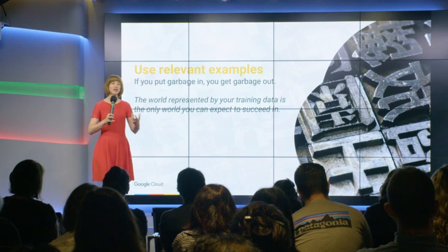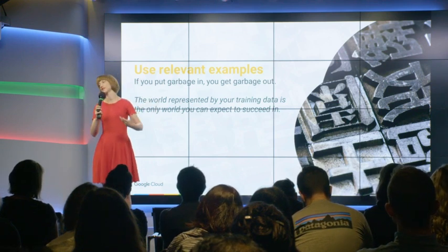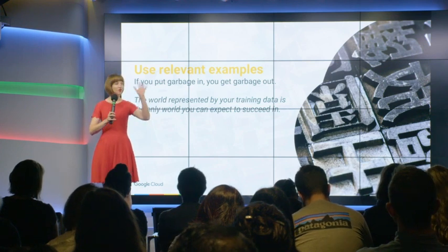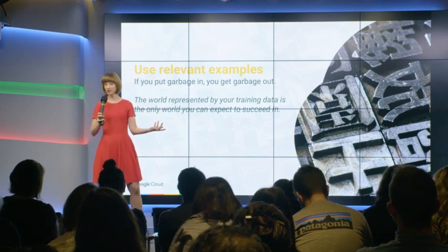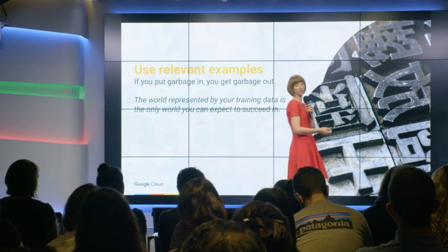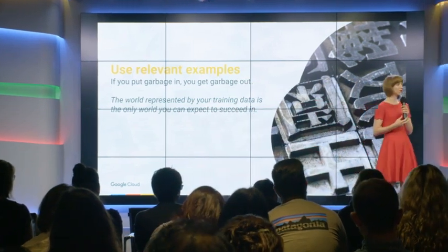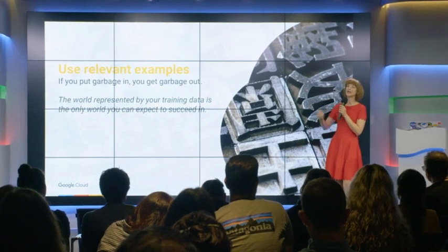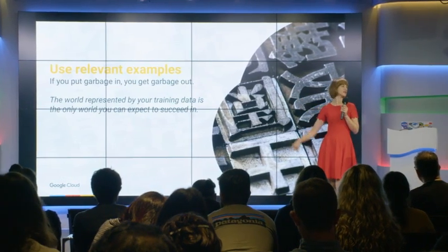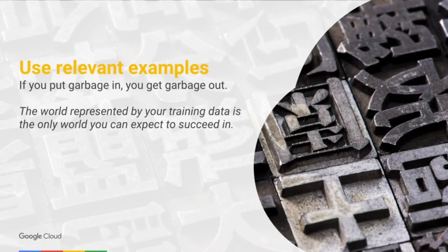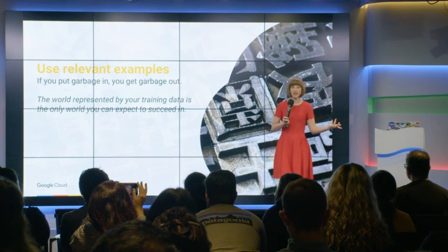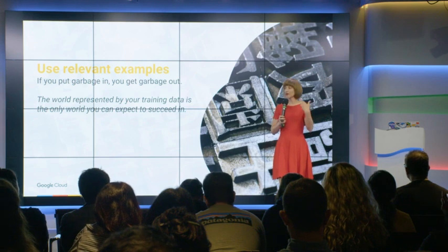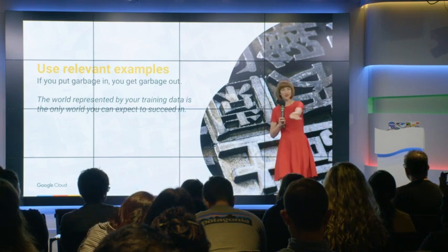We need to stop saying 'Data' with a capital D, like just having data makes things magical somehow. And even worse, data with a capital D plus the holy water of machine learning means it just works. Data is just examples and information — you are trying to express yourself by example. Your examples should be relevant. I say to Google engineers going near machine learning, they should consider tattooing this sentence on themselves: 'The world represented by your training data is the only world you can expect to succeed in.' If you pick a silly training data set, you're going to succeed in the world represented by that data set — and that's just not the reality you inhabit. So your system is going to crash and burn in the real world.